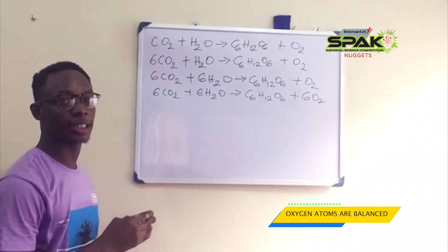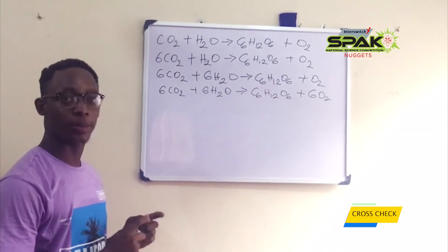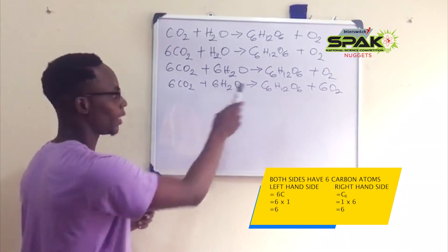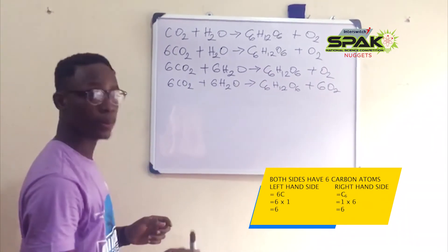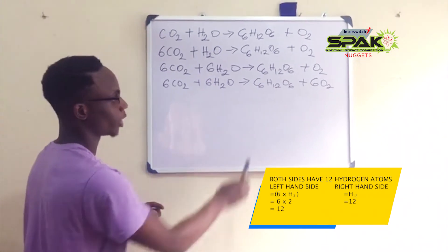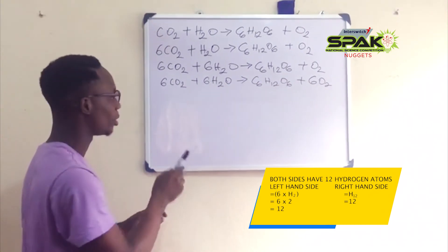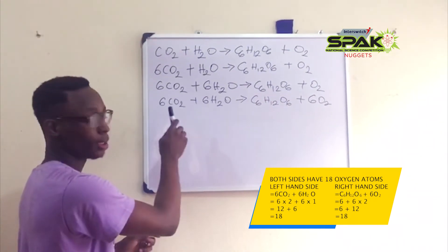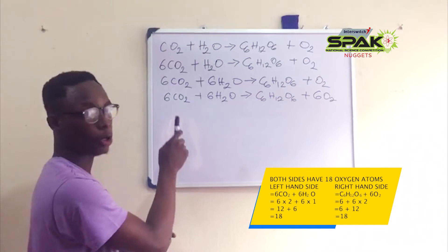Now, we have to check our work so we don't make any mistake. On the left hand side we have 6 carbon atoms and on the right hand side we have 6 carbon atoms. On the left hand side we have 6 times 2 plus 6 times 1, that is 12 plus 6, which equals 18 oxygen atoms.